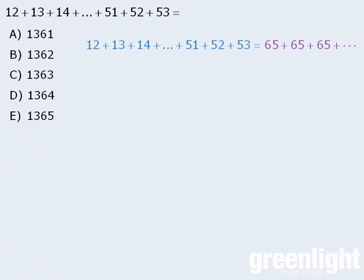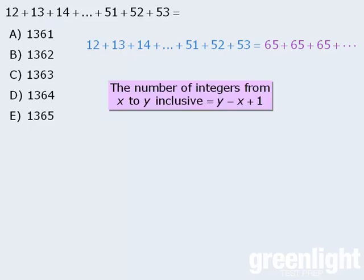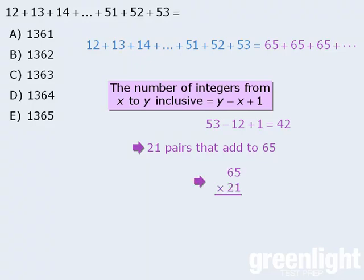How many numbers are there in the original sum — that is, how many integers are there from 12 to 53 inclusive? In the word problems module, we'll learn that the number of integers from x to y inclusive equals y minus x plus 1. So the number of integers from 12 to 53 is 53 minus 12 plus 1, which equals 42. So if there are 42 numbers from 12 to 53, then we will have 21 pairs of numbers that each add to 65. We can find our answer by multiplying 21 by 65, or even faster by recognizing that the units digit of 21 times 65 would be 5. Since only one answer choice has a units digit of 5, that must be the correct answer.